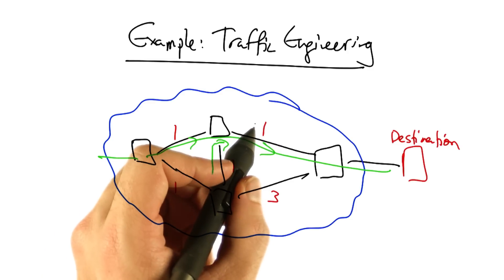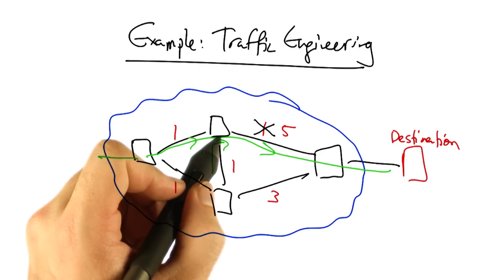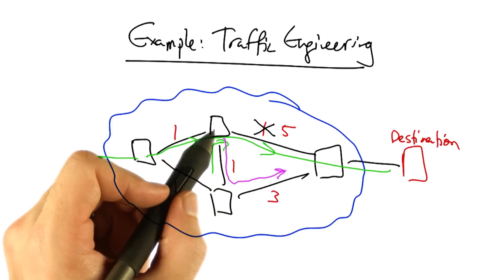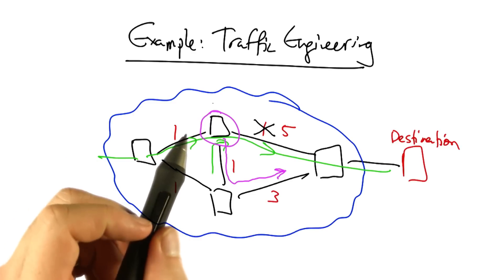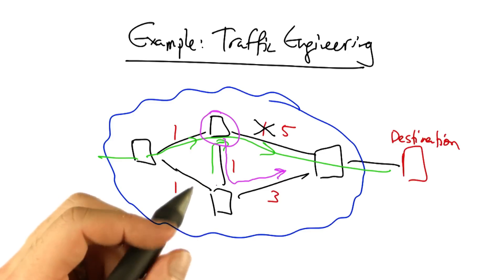Let's suppose now that an operator wants to change the network state to shift traffic off of this link. He could do so by updating the link weight. In doing so, the new shortest path from this top router would be as follows. But what if the state in the top switch occurred before the state in the bottom switch could be updated?